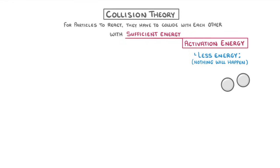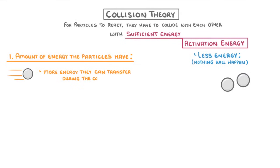So if we were to think about an entire reaction, which will involve tons of particles, then the rate at any particular point is going to depend on two main things. The most obvious is the amount of energy that the particles have. The more energy they have, the more energy they can transfer during the collision, and so the more likely they are to surpass that minimum activation energy.